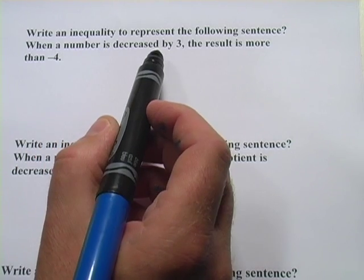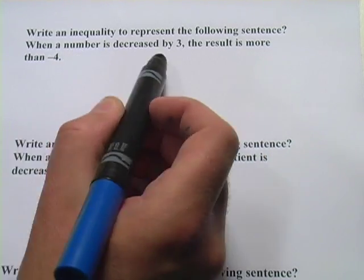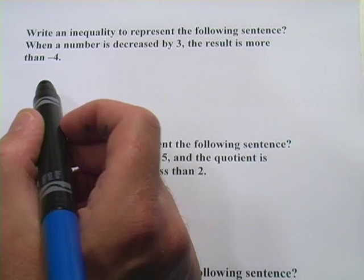The first one says, write an inequality to represent the following sentence. When a number is decreased by 3, the result is more than negative 4.